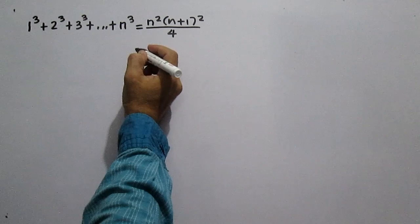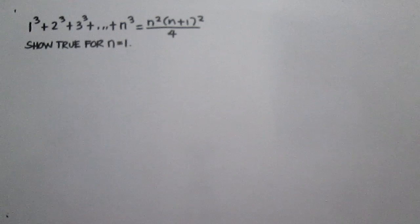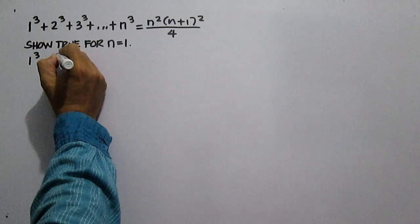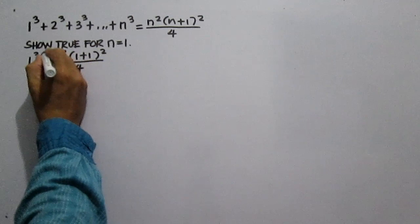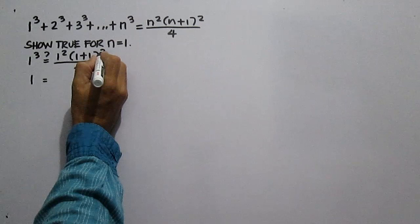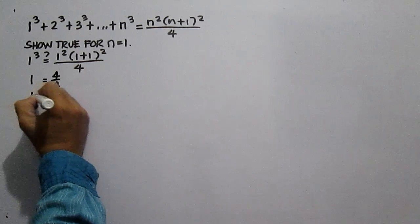Show that the statement is true for n equals 1. Substitute 1 for n: 1 cubed is equal to 1 squared times the square of the quantity 1 plus 1, all over 4. This gives 1 is equal to 4 over 4, which simplifies to 1 equals 1. True.